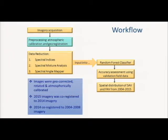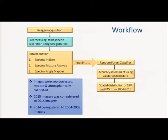For atmospheric calibration, we use a radiative transfer model to estimate atmospheric properties and calibrate the radiance data to top-of-canopy reflectance. Then we co-register the images back to 2004, so we can do the time series. Overall, including the HiMap data, it's about 10 terabytes of raw data.